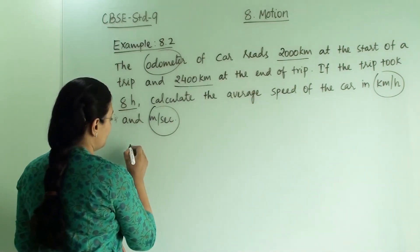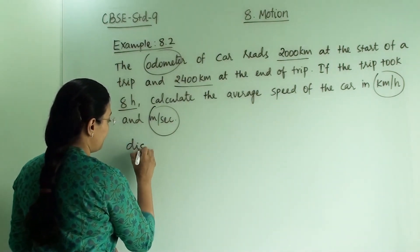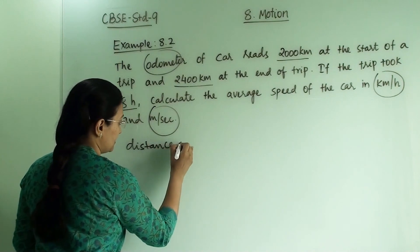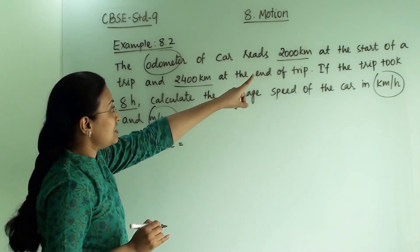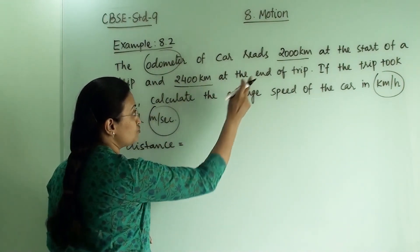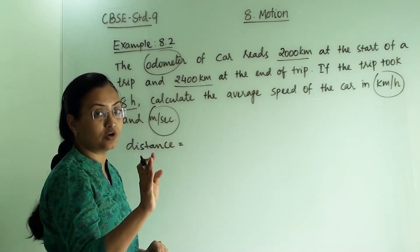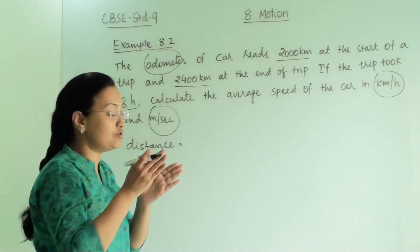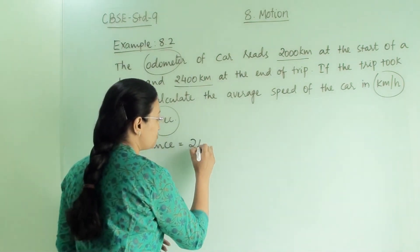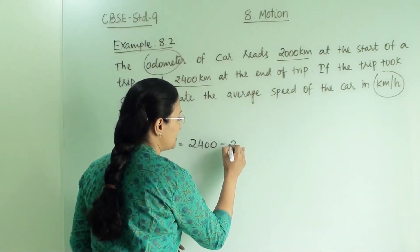It started from 2000 km. When we are finding out the distance, it initially showed 2000 and ended at 2400. So the actual distance covered is 2400 minus 2000.